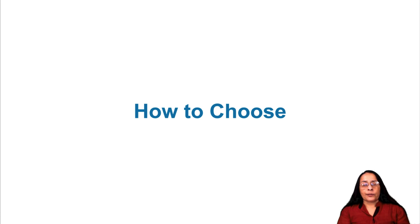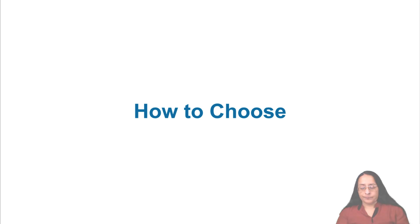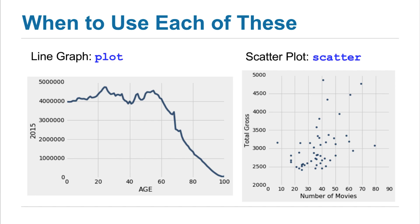Line graphs and scatter plots both represent two numerical variables. So how do we choose which one to use? Let's quickly go over that. Here's the line graph and scatter plot that you've seen before. You know that plot and scatter are the two Python methods that will help you draw those diagrams. But the question now is, before you decide that you want to use one or the other, what are the questions you should ask yourself?